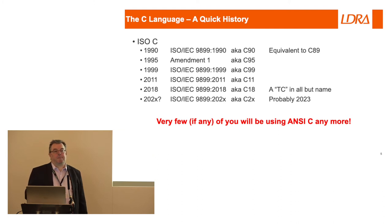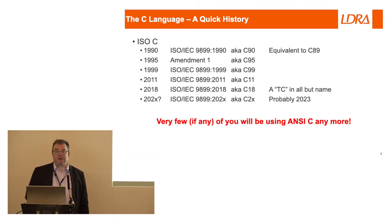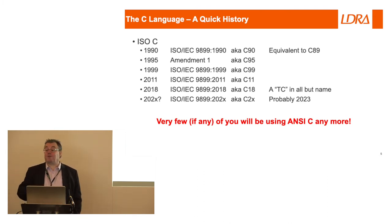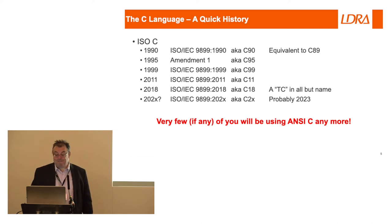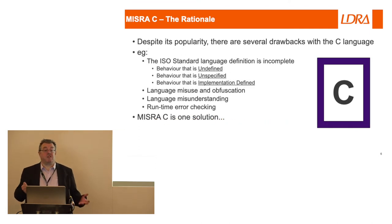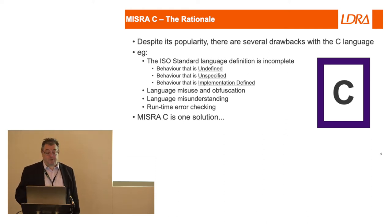All being well next year, maybe 2023, will be the next version and that will add a whole load of new features — if you're a C programmer, a lot of them already exist in C++. Despite the increasing use of C++, C is still the most commonly used programming language in the embedded sphere.